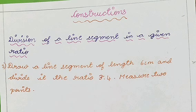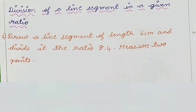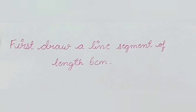Now what we have to do is divide the line segment into the ratio 3 is to 4 and measure the two parts. First we draw a line segment of length 6 cm.